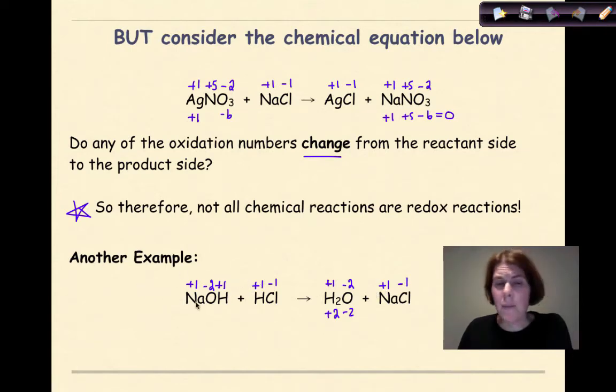I look over at the reactant side. Sodium is plus one. Sodium is plus one on the product side. Oxygen is the same. Hydrogens in all the places where it exists are the same. And the chlorine oxidation numbers are the same. So, yet again, we have another chemical reaction that cannot be classified as a redox reaction because we're not seeing a change in oxidation numbers as we go from the reactant side to the product side.